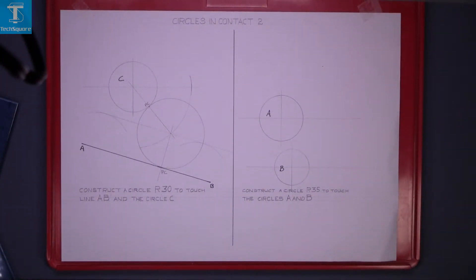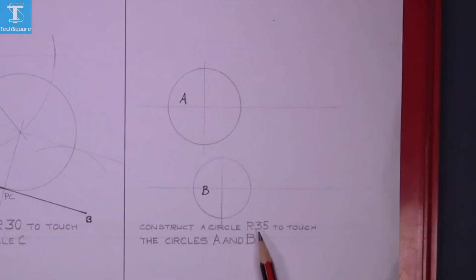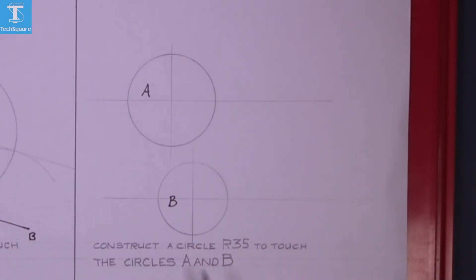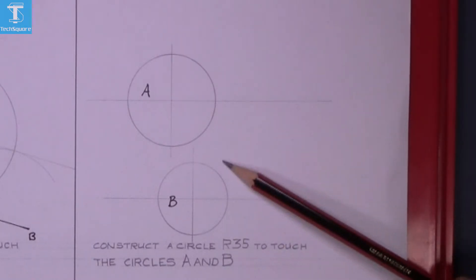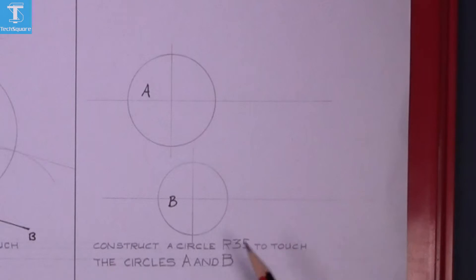Now we are looking at constructing a circle 35mm radius to touch circle A and circle B. So it's going to be in this position here and it has a radius of 35.